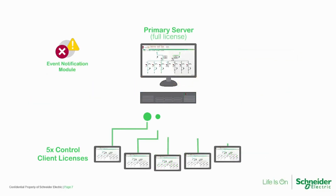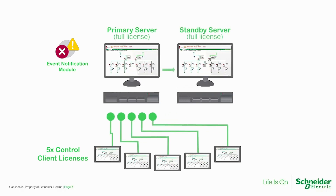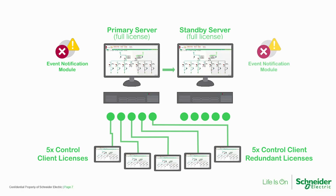Finally, a redundant system adds a bit of complexity. The standby server must have a full server license with the same number of points as the primary server. However, clients only require a redundant client license, which always has unlimited points. The number of redundant client licenses should still match the primary server. If you have purchased the event notification module, you'll want a second module license to run on the standby server as well.